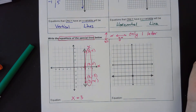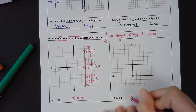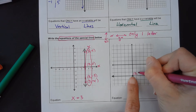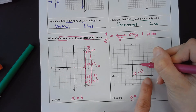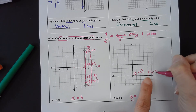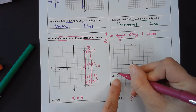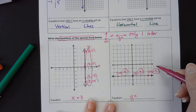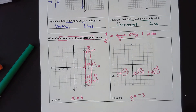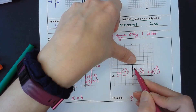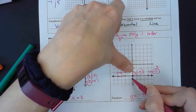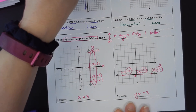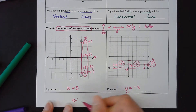For the horizontal line, I know it's going to be y equals something. In case we forgot, we can write down some points: 0 comma negative 3, 4 comma negative 3, and negative 4 comma negative 3. I notice they all have y's equal to negative 3. You could also just look at the graph — the line is crossing the y-axis at negative 3. So the equation is y equals negative 3.